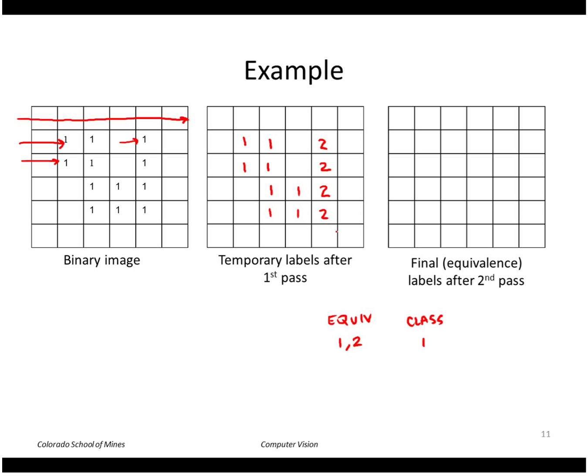Until we're done with the first pass. Then the second pass, we go through the image and we replace all the temporary labels with the class number that we see here. So one is replaced with one, two is replaced with one, etc. So basically we have a single region of ones like this, so we're going to get the same result.